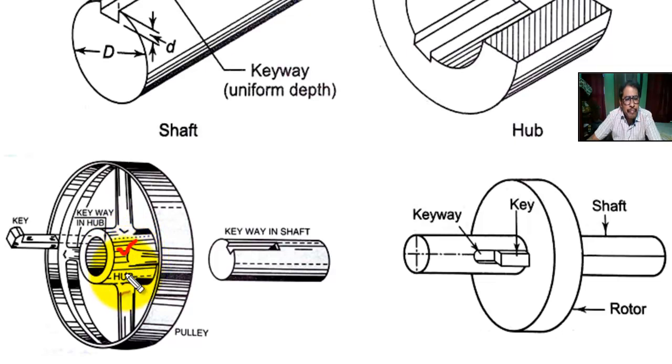This is the half of the pulley keyway inside the hub. This is the key, this is shaft. Shaft is inserted inside the hub and then we insert the key.